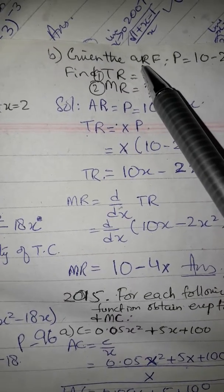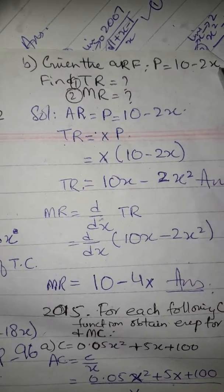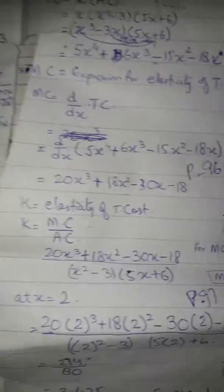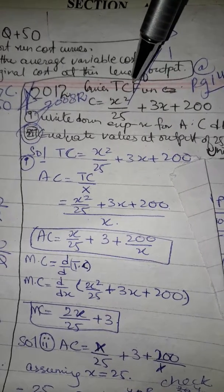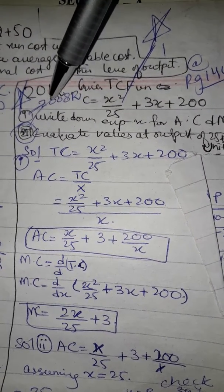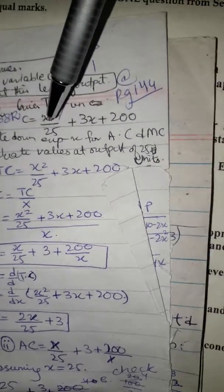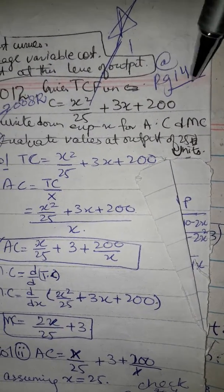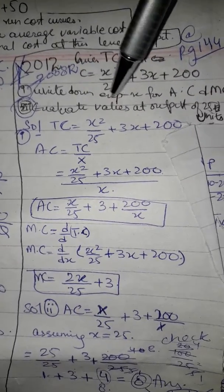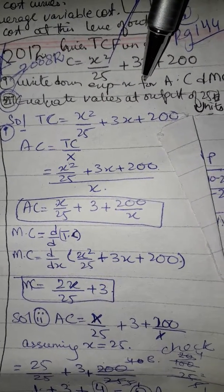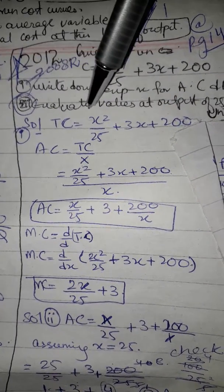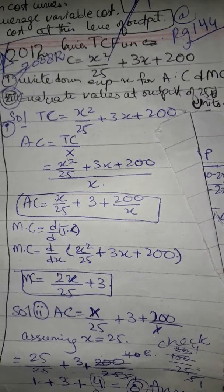Part B gives average revenue function p equals 10 minus 2x — find TR and MR. The 2012 question gives total cost function c equals x² + 135 plus 3x plus 200, which is also a repeated question from 2008. On page 144 of the book you can find the solution: write expressions for AC (average cost) and MC (marginal cost), and evaluate at 25 units of output.